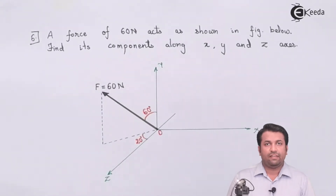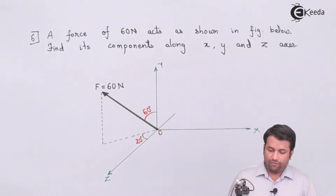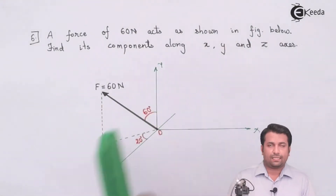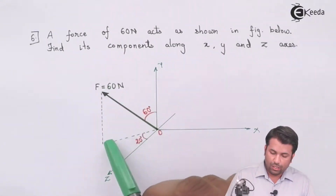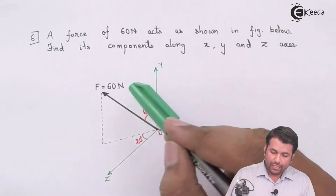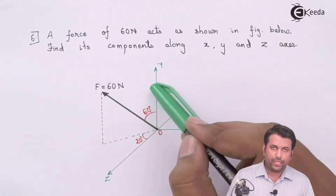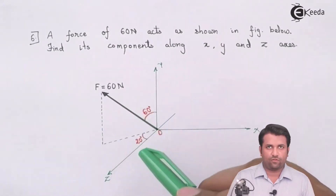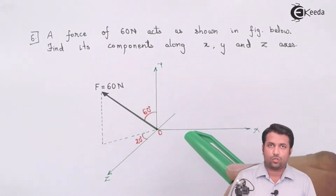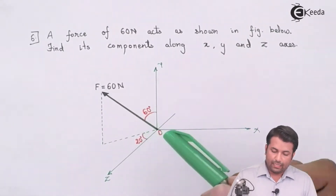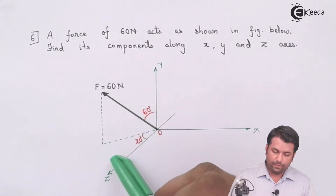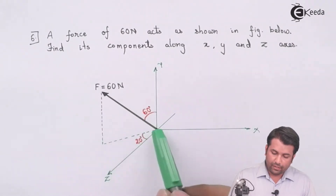To find the force along the y-axis, I need to find the component of this force along the y-axis. I'll draw a perpendicular from this point — parallel to the line — to this point, making a right angle triangle. This gives me the cosine component for this force, from which I can find the y-component. Similarly, to find the x and z components, I can see the projection of this force by dropping a perpendicular from this point onto the plane.